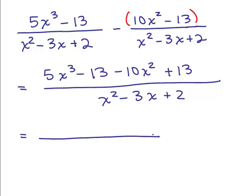Everybody okay with that? If not, you can go back and look how I did it on the previous problem where I took two steps to get there. And then we're going to combine like terms. Again we have a negative 13 plus 13 gone, so I've got 5x cubed minus 10x squared over x squared minus 3x plus 2.